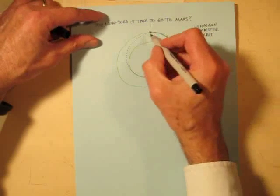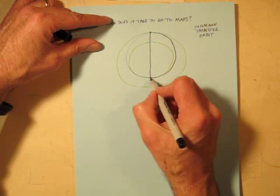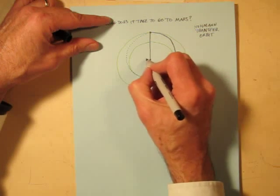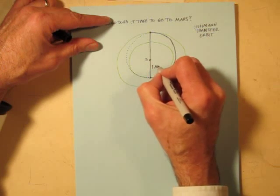The major axis of this ellipse goes through here and we know how long that is. Let's put the Sun in the center here. We know that the distance from the Sun to Earth is one astronomical unit, AU.